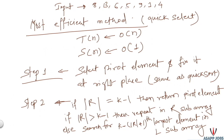Else, if the size of the right subarray is less than k minus 1, we ignore the right subarray and in the left subarray we search not for the kth largest, but for the (k minus size of right subarray minus 1)th largest element. At any point we are completely ignoring one subarray — either left or right depending on the condition — and by doing this we find our answer in linear time.